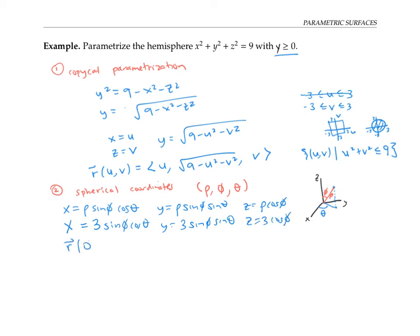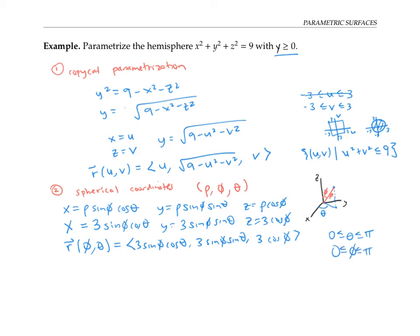I'll put this in vector notation. To find bounds on φ and θ: since I'm only looking at the hemisphere where y is positive, θ ranges between zero and π. φ also ranges from zero (at the top of the hemisphere) all the way to π (at the bottom). If I prefer to write my parameters as u and v instead of φ and θ, I can just replace φ with u and θ with v everywhere. And that completes my parameterization.